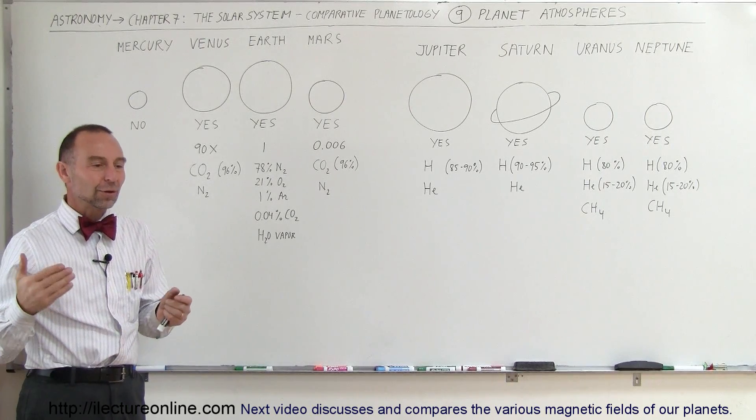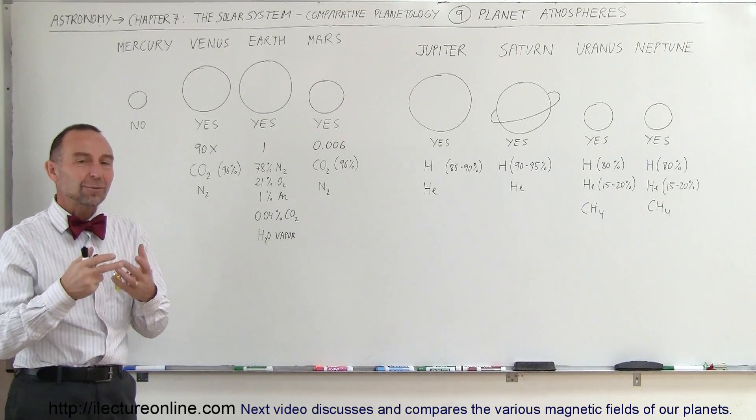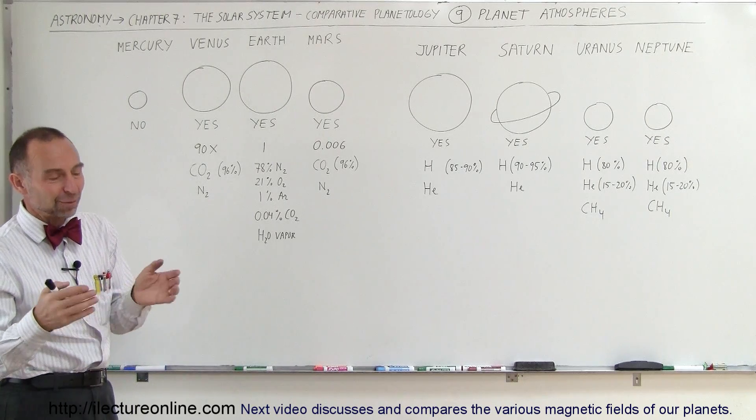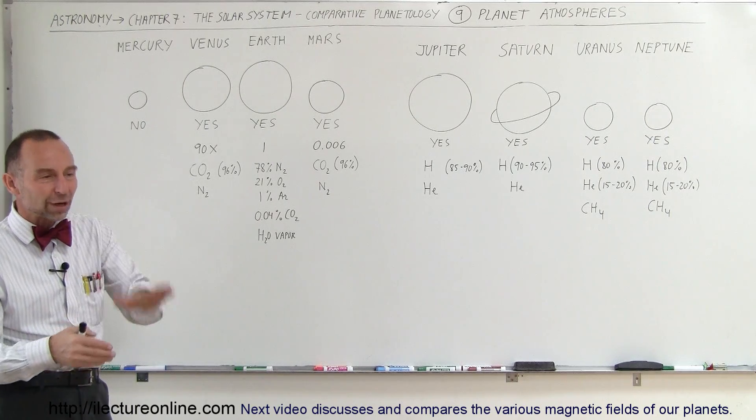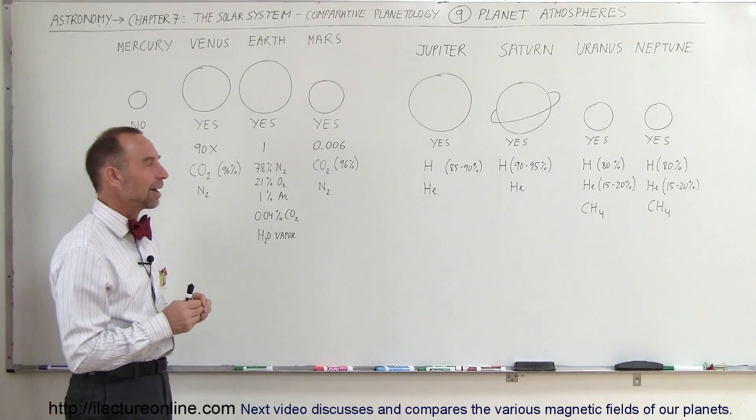Diving into the atmosphere of Jupiter or Saturn and continuing downward, eventually the density becomes so large that you can no longer be considered to be in the atmosphere, but you're not in the interior of the planet. Where that exact boundary is, is of course not an exact science to figure out.